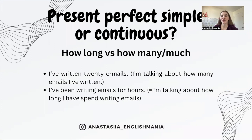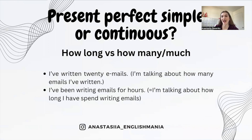Finally, consider how long, how much, and how many. We use present perfect continuous to talk about the duration of an action — how long we have been doing something. For example: 'I've been writing emails for hours' — this emphasizes how long I've spent writing. We use present perfect simple when talking about how many things or how much we've done — the result. For example: 'I've written 20 emails' — this tells us how many emails I've written.